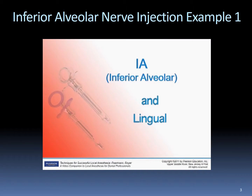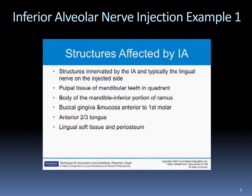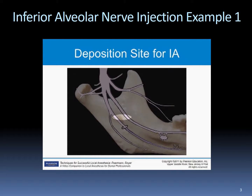The inferior alveolar and lingual injections. The inferior alveolar injection anesthetizes the periodontal ligaments, pulpal and osseous tissues in the mandibular quadrant, buccal gingival tissues from the premolars through the midline in the quadrant, and the skin and mucous membrane of the lower lip. Because the lingual nerve runs just medial and anterior to the inferior alveolar nerve, this nerve is normally anesthetized during the same needle insertion. The lingual nerve innervates the anterior two-thirds of the tongue, the floor of the mouth, and the lingual gingiva of all the mandibular teeth in the quadrant. This nerve does not innervate any pulpal tissue.